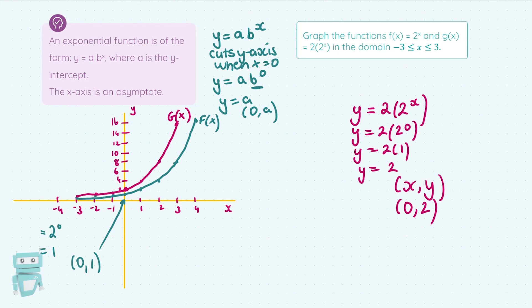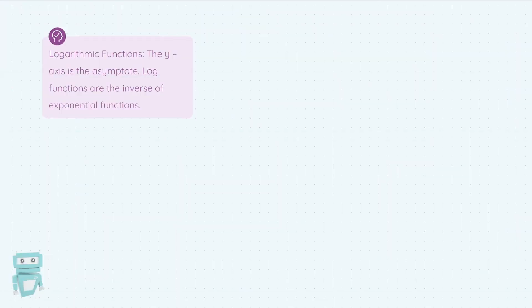Now if we look at a log function, just a general shape of it. On a log function, the y-axis is an asymptote. So it's an inverse of an exponential function. It's the opposite of an exponential function. An exponential function, the x-axis was the asymptote. In a log function, the y-axis is the asymptote, so it never cuts through the y-axis.